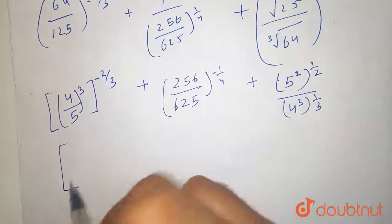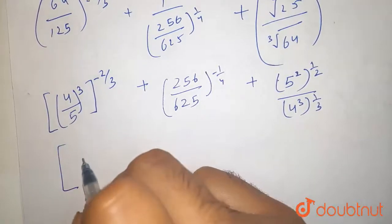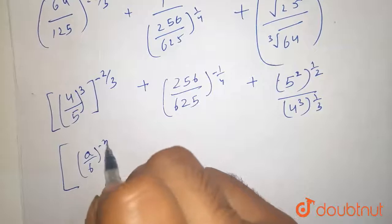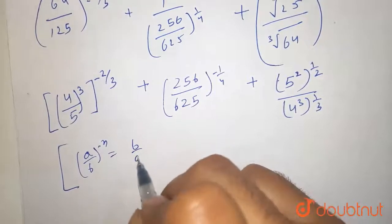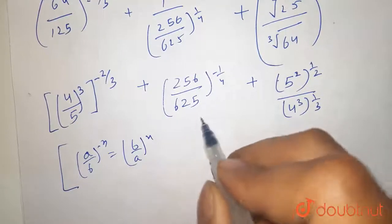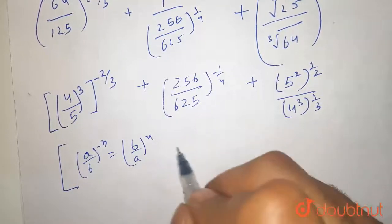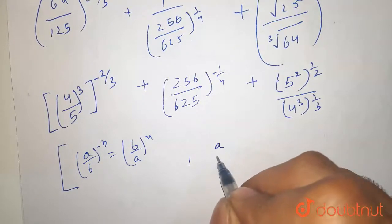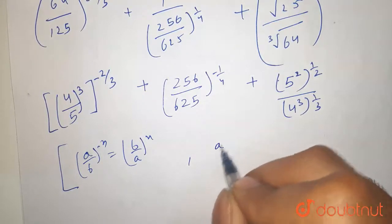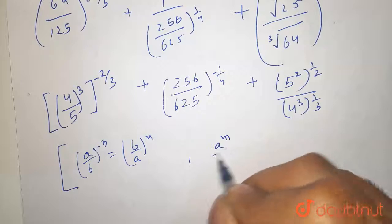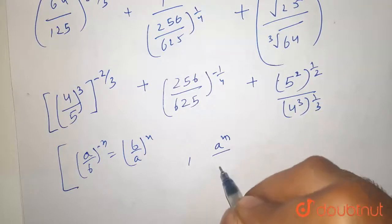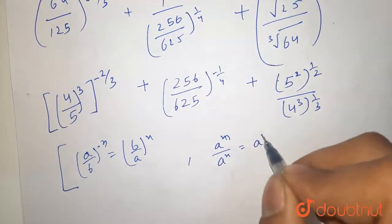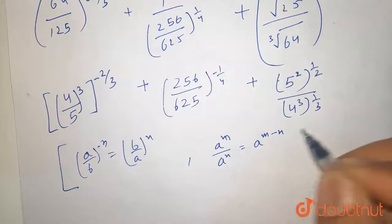Here recall some properties: a by b raised to the power minus n, which is equal to b by a raised to the power n. And a raised to the power m divided by a raised to the power n is equal to a raised to the power m minus n.